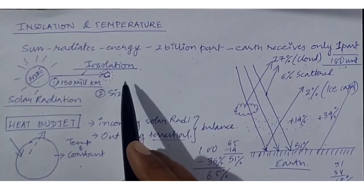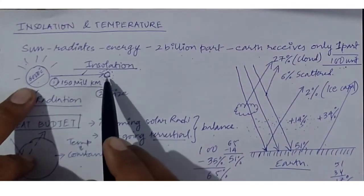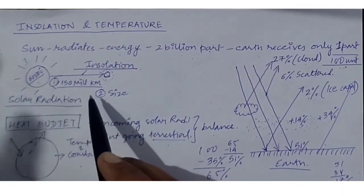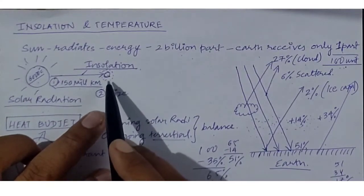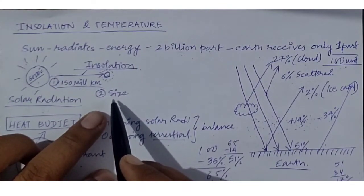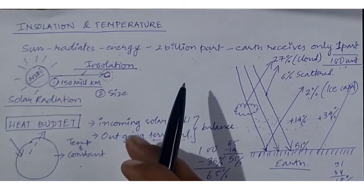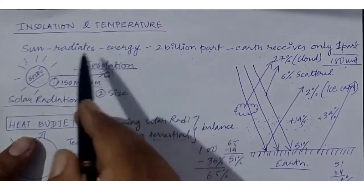Now, why do we receive only one part out of 2 billion parts of solar energy? The reason is simple. First is distance — the distance between the sun and the Earth is almost 150 million kilometers, so it's very far away. Second is the size of the Earth — since the size of the Earth is small, it can only absorb radiation according to its size. If it were bigger, it would receive more insolation.